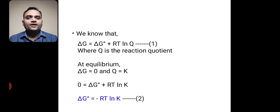We have studied in previous lecture that delta G is equal to delta G0 plus RT ln of Q, where Q is the reaction quotient. Delta G is equal to delta G0 plus RT ln of Q.